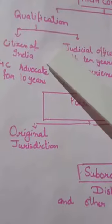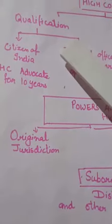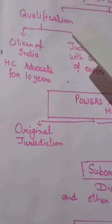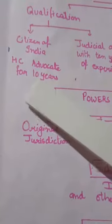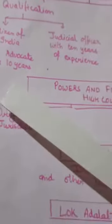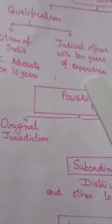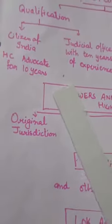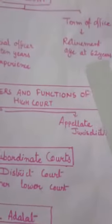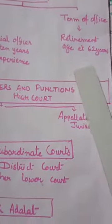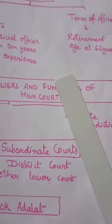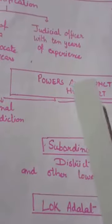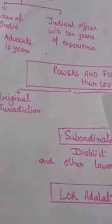In the High Court, the qualification of judges and lawyers is that the person must be a citizen of India and a High Court advocate for 10 years, or a judicial officer with 10 years of experience. This is the qualification for working in the High Court. The retirement age is 62; in the Supreme Court it is 65. Now about the powers and functions of the High Court.